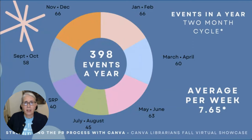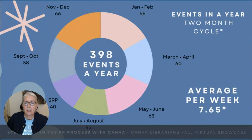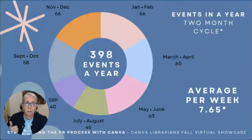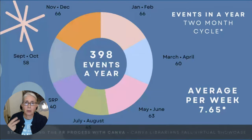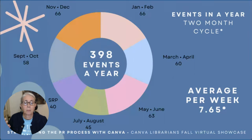Our program planning runs in a two-month cycle. This chart shows the programs in the two-month cycles with the summer reading program as its own special entity. The events roughly total 398 for a year, which is about 7.65 a week. But then you need to start including two story times every Tuesday and Thursday, the quilters group on Tuesdays, and the movies groups on Thursdays. So that total moves more towards 12 programs a week.